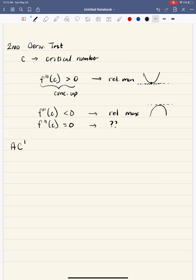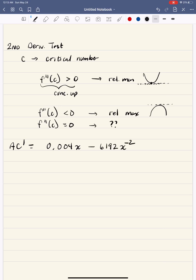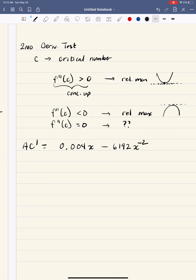So AC double prime. Well, let's just look back at what AC prime was. So I'm going to write that down first. AC prime was 0.004 X minus 6912 X to the negative two.